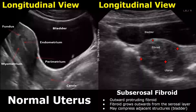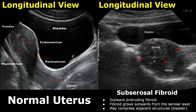This is a transabdominal image of the uterus showing a subserosal fibroid. We can see the fibroid protruding outwards and it has compressed the bladder wall. Due to this protrusion we can call it a subserosal fibroid.